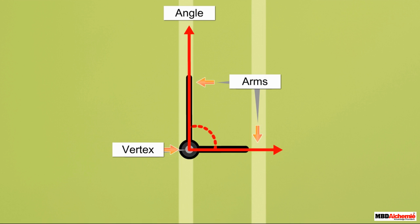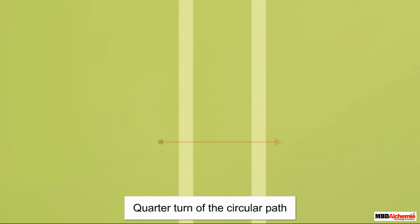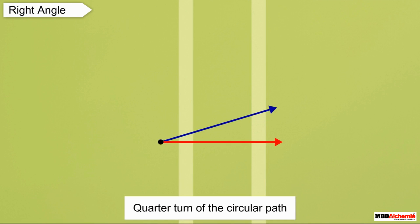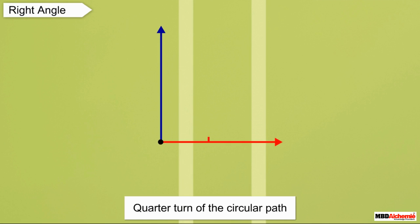There are different types of angles. Let's learn about these types. Right Angle: When the revolving arm takes a quarter turn of the circular path, the angle so formed is called a right angle.